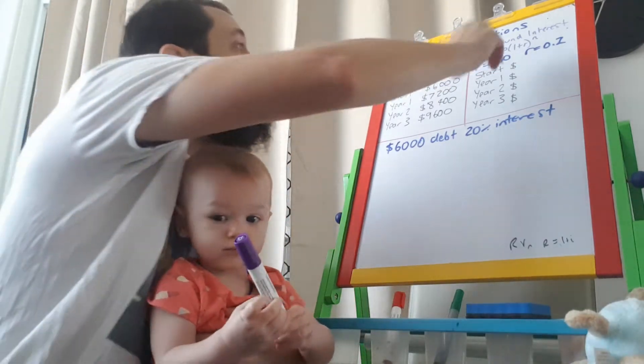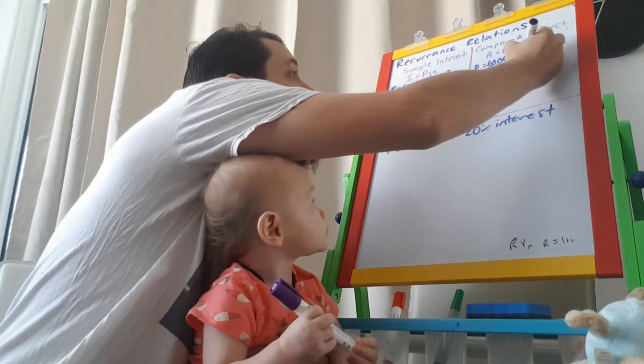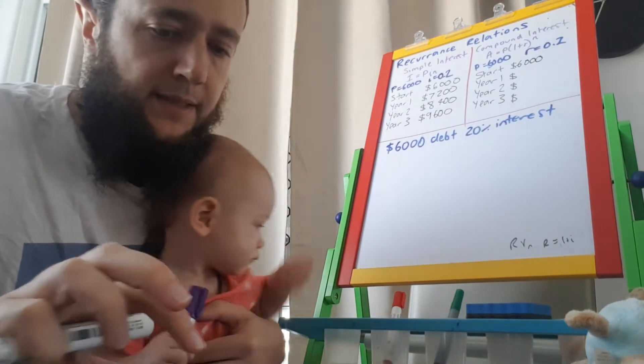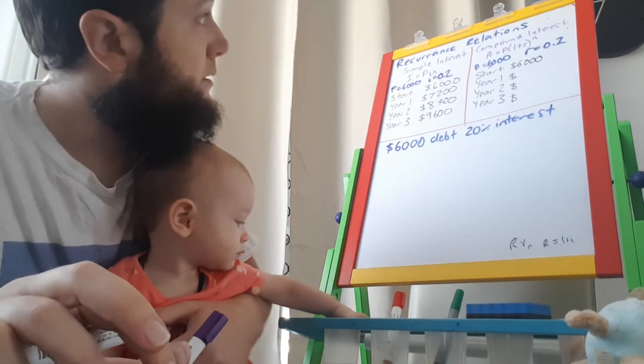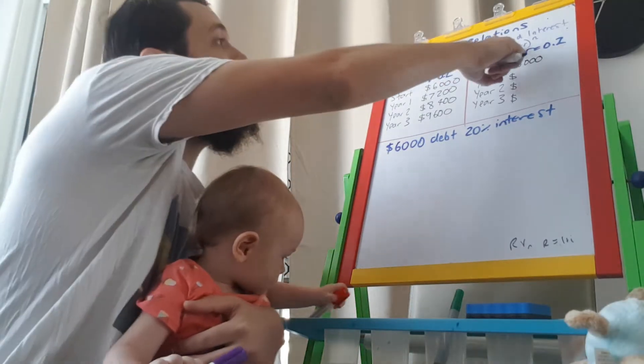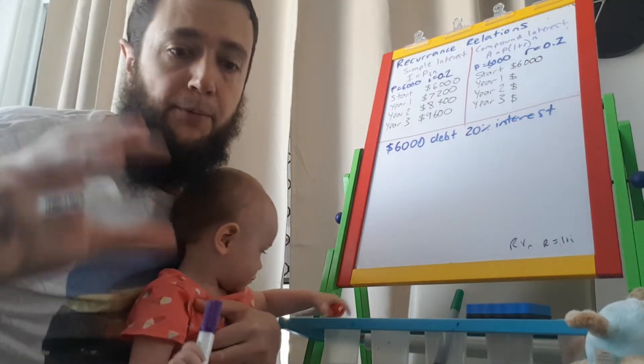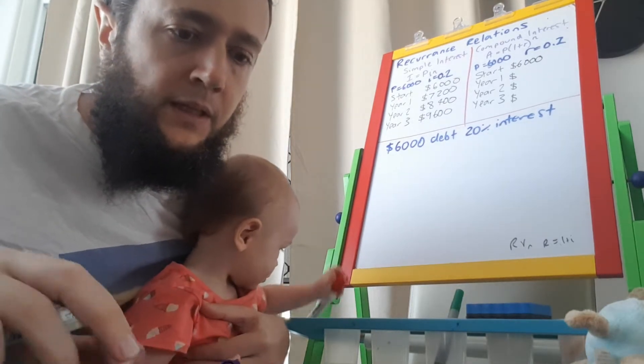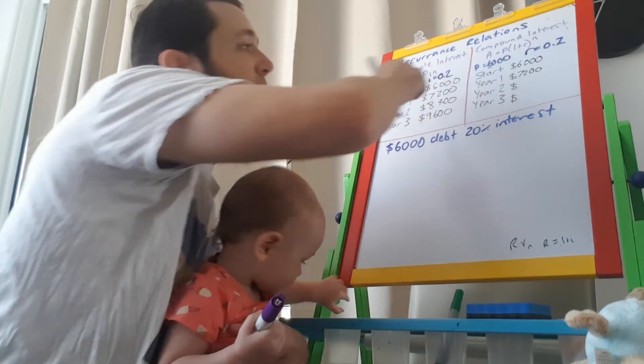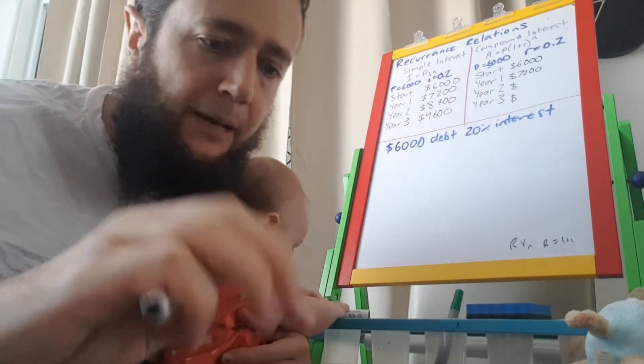All right. On the compound interest side, we need to do the same thing. We're starting with 6,000. So 6,000 times 1 plus 0.2. I'm just using this formula here. There are examples in the other lesson. It'll tell you that after one year, it's worth 7,200. At the moment, it's the same as simple interest. That will happen.